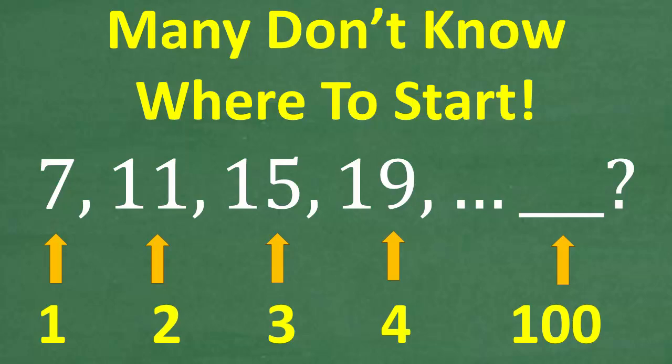So the first term or first number in the sequence is 7. The second is 11. The third term is 15. The fourth is 19. So we have a clear pattern. And what you can do here is just continue this pattern until you figure out what the value of the 100th term is.